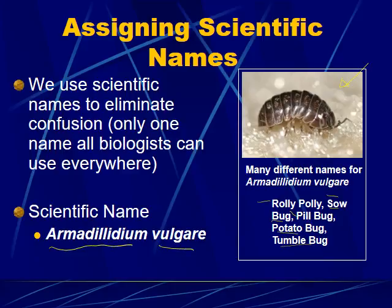The scientific name for this guy is Armadillium vulgara — like 'armadillo' for armored, and 'vulgara' for the species. That's the scientific name whether you're here in America, whether you're in Europe, whether you're in South Africa — it doesn't matter where you are, that's the scientific name all around the world. These general common names we don't like to use in science; we use the scientific name.